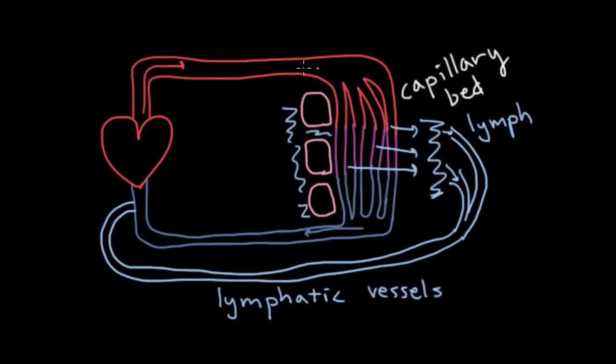The heart pumps blood throughout the body, and it pumps so powerfully that it actually squeezes some fluid out of the capillaries. And that fluid becomes lymph, and it's the lymphatic system that gathers all that fluid and brings it back into circulation.